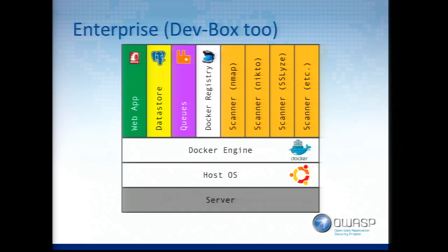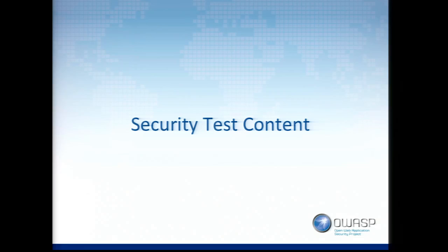Those are our main deployment models. Roger mentioned the enterprise model — this is also how we do our dev box. Everything is packaged up into its own Docker container, making it pretty quick to spin things up. This has been low on our priority list because our customer is just Cisco right now. Before releasing to the open source community there will be a little cleanup to do, but that is the plan for allowing people to have on-prem solutions rather than using our cloud solution. Now I'm going to pass it over to Blake, who'll talk about the security test content.